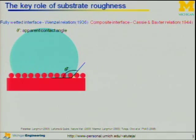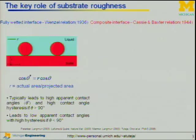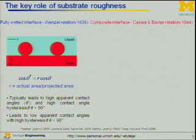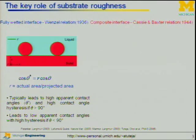First, we have to understand two relations. One, the Wenzel relation, which is a fully wetted interface — as you can see, there is no air trapped beneath these spheres. The equation cosine theta star equals R cosine theta, where R is the actual area divided by the projected area, defines this. Theta star is the new apparent contact angle. This typically leads to high apparent contact angles and high contact angle hysteresis if Young's is greater than 90, and leads to low apparent contact angles with high hysteresis if Young's is less than 90.